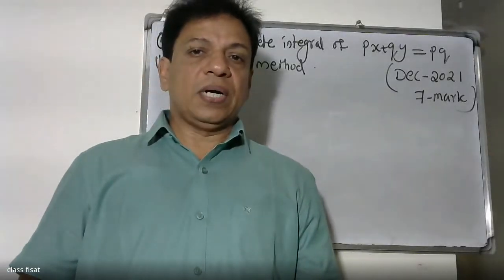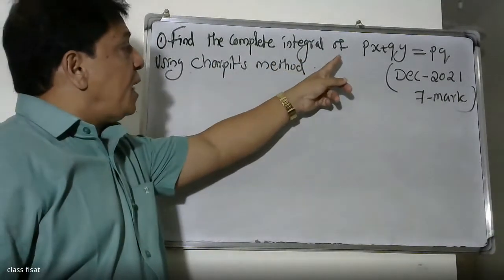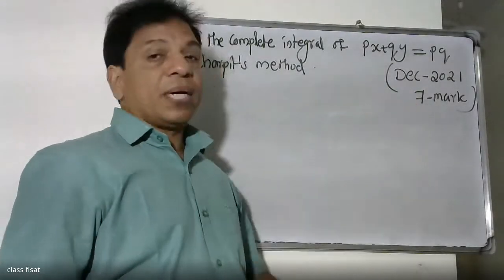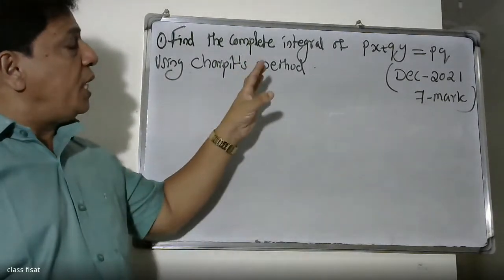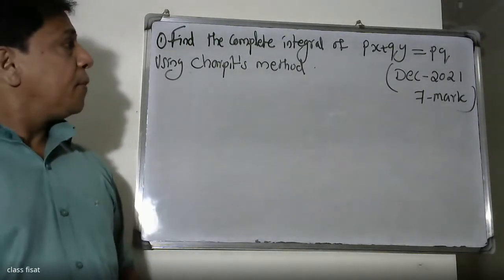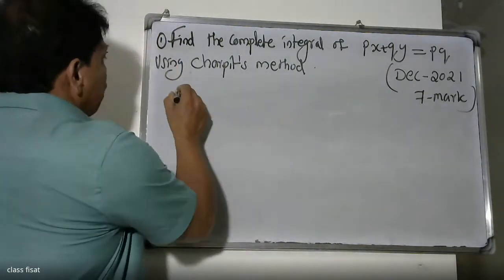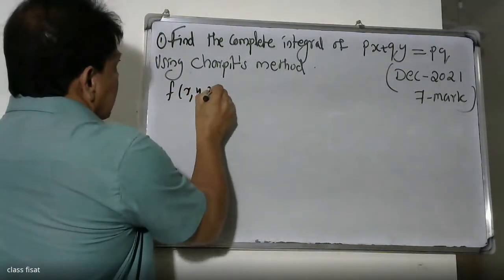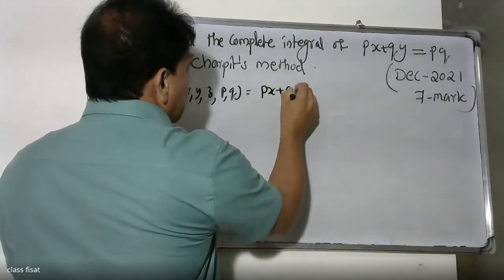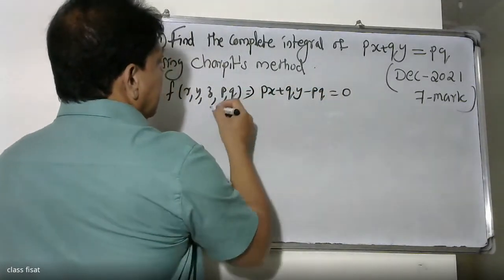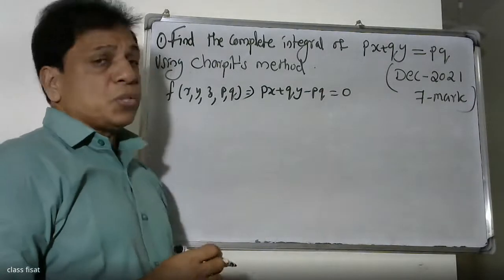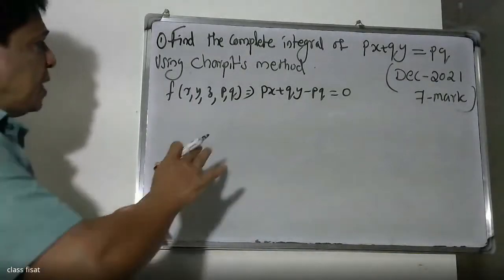Good morning students. Find the complete integral of px plus qy equal to p squared using Charpit's method. This involves non-linear partial differentiation. Setting up the equation: F of x, y, z, p, q is equal to zero, that is px plus qy minus pq is equal to zero, which gives F equal to px plus qy minus pq.